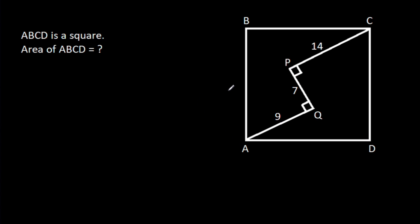In this video, we have been given that ABCD is a square and angle AQP is 90 degrees, angle CPQ is 90 degrees. AQ is 9, PQ is 7, CP is 14.